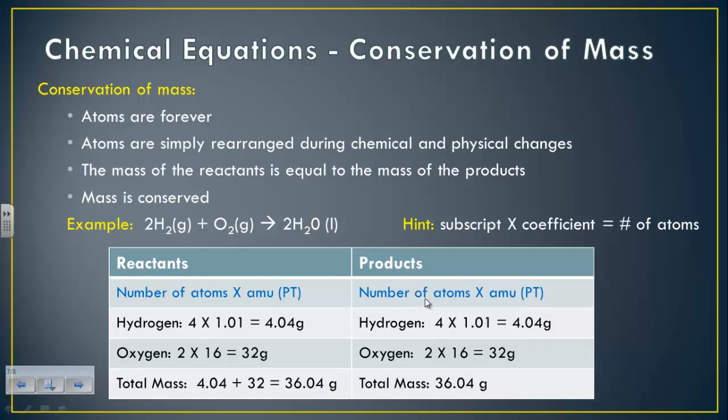You then do the same thing for your products. You look at the hydrogen. You have 2 coefficient and 2 subscripts, so 2 times 2 gives me 4 atoms of hydrogen, times the mass found on the periodic table, giving me 4.04. Again, with oxygen, you have a coefficient of 2, a subscript of 1, so we have 2 atoms of oxygen, times the mass of 16 gives me 32, and when you add them together, it's 36.04. So the total mass of your reactants equals the total mass of your products. So you have the conservation of mass when you have a properly balanced chemical equation.